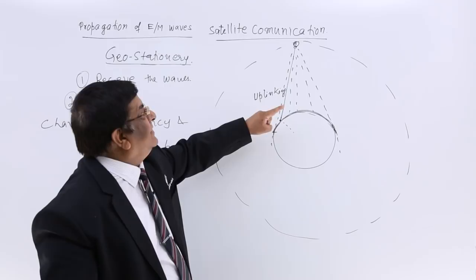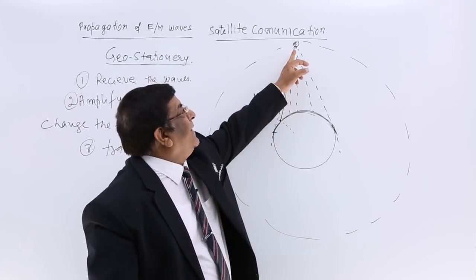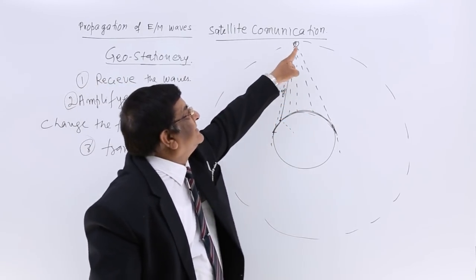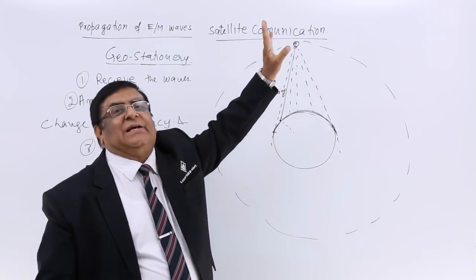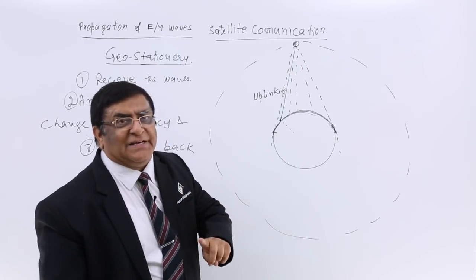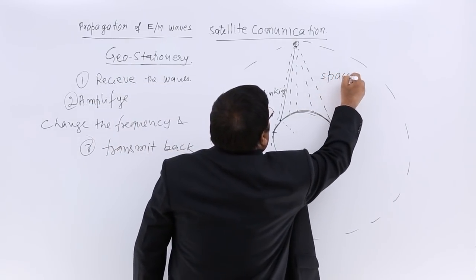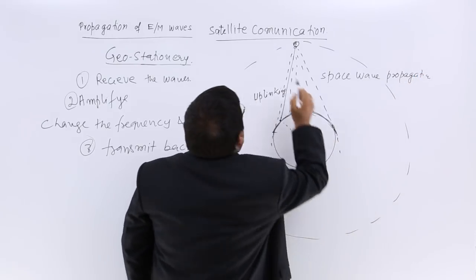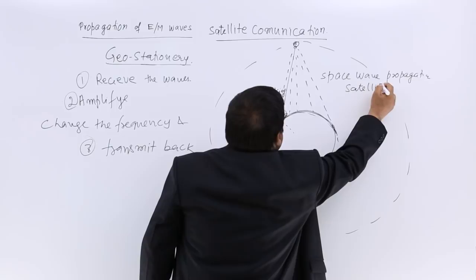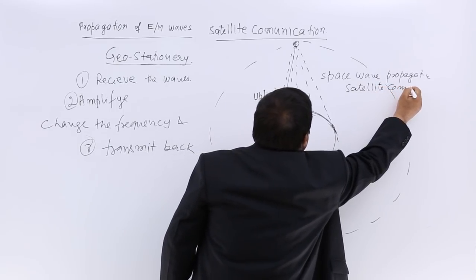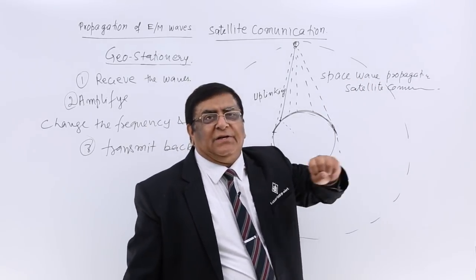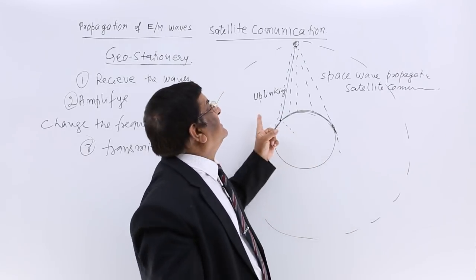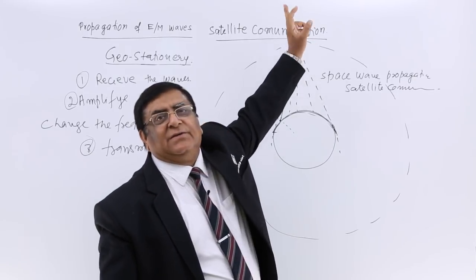And this type of transmission, propagation, going in the space, coming in the space. So, this is a space communication. And what we are using? A satellite, so we give it an adjective that this is a satellite communication. So, propagation, space wave propagation, space wave propagation. Communication, satellite communication. So, in space wave propagation, there was one line of sight communication that we were using on the earth surface. And there is one this space propagation, we are using it for the satellite. This is satellite communication.